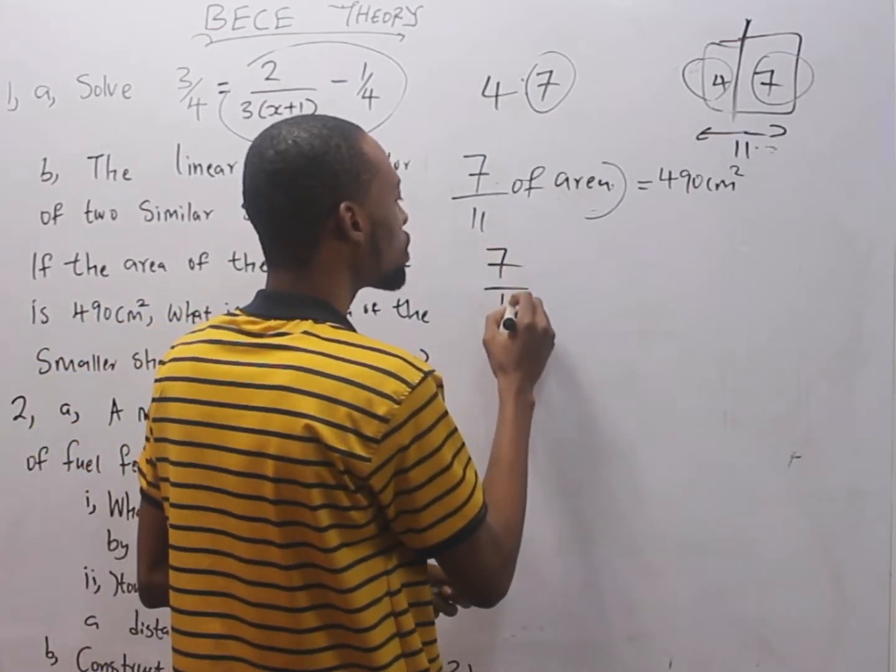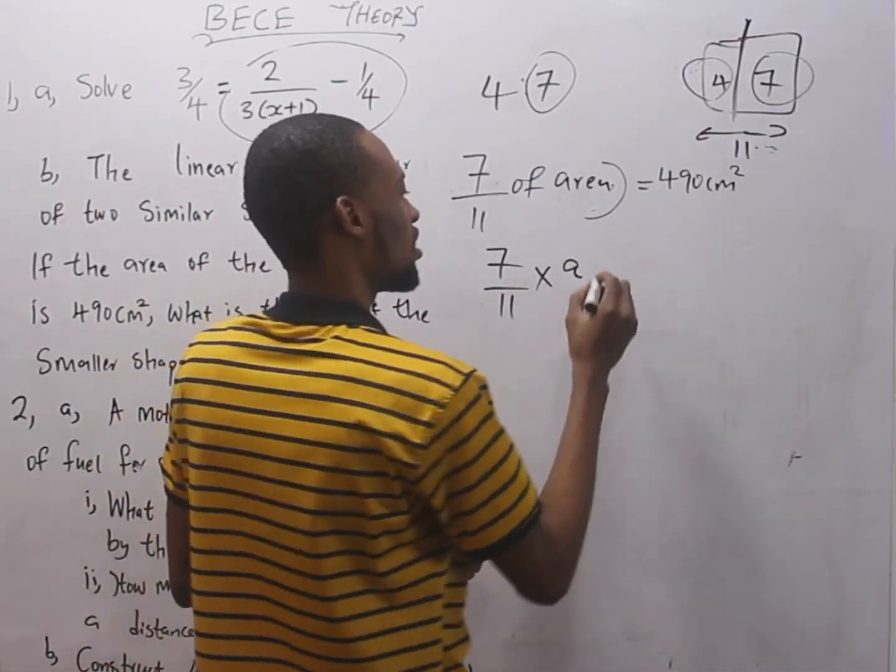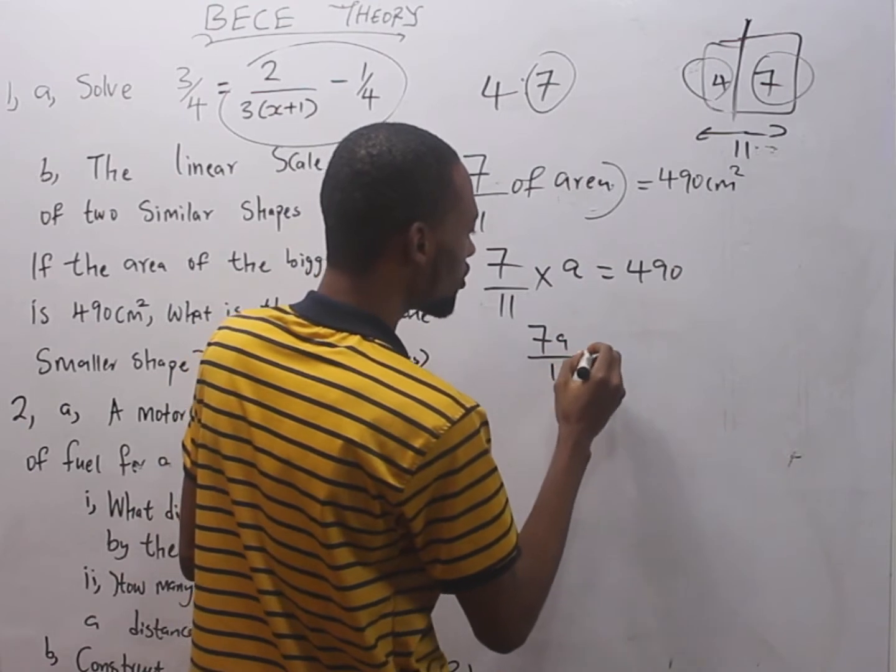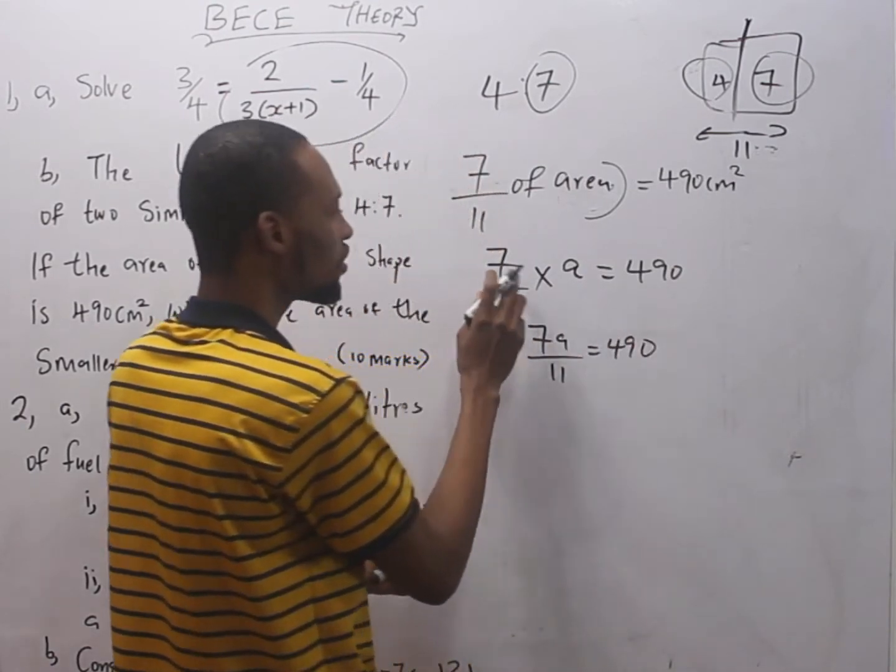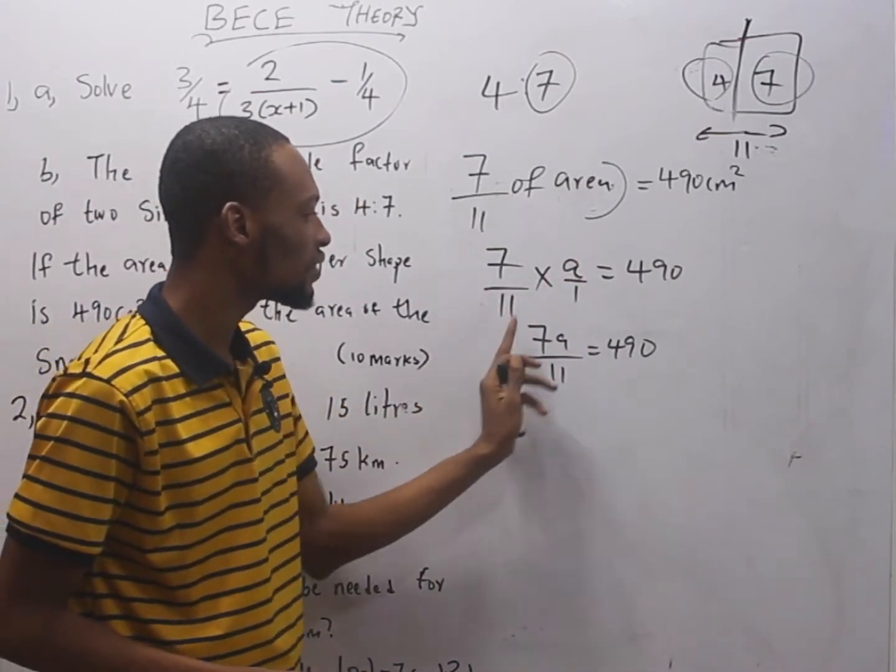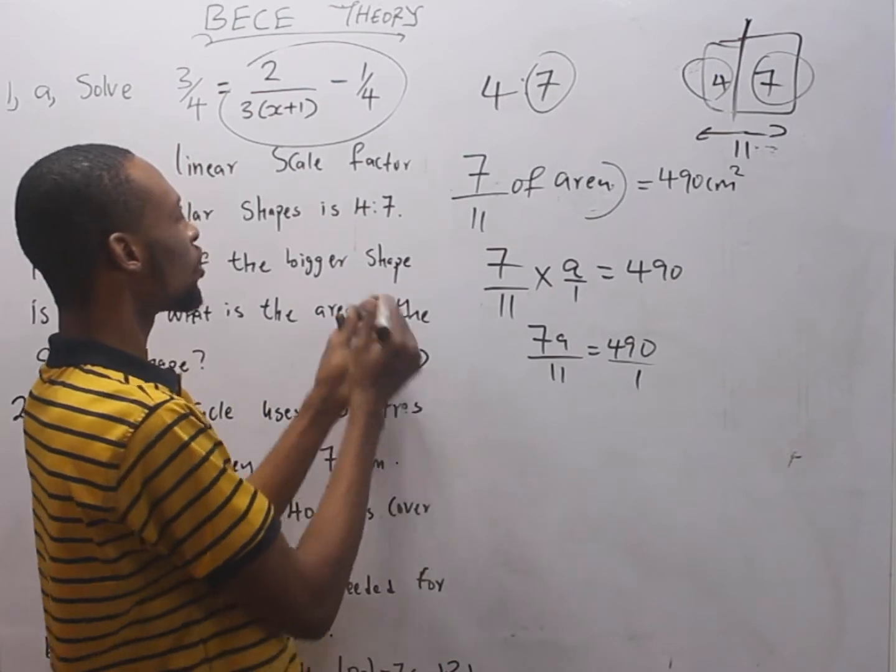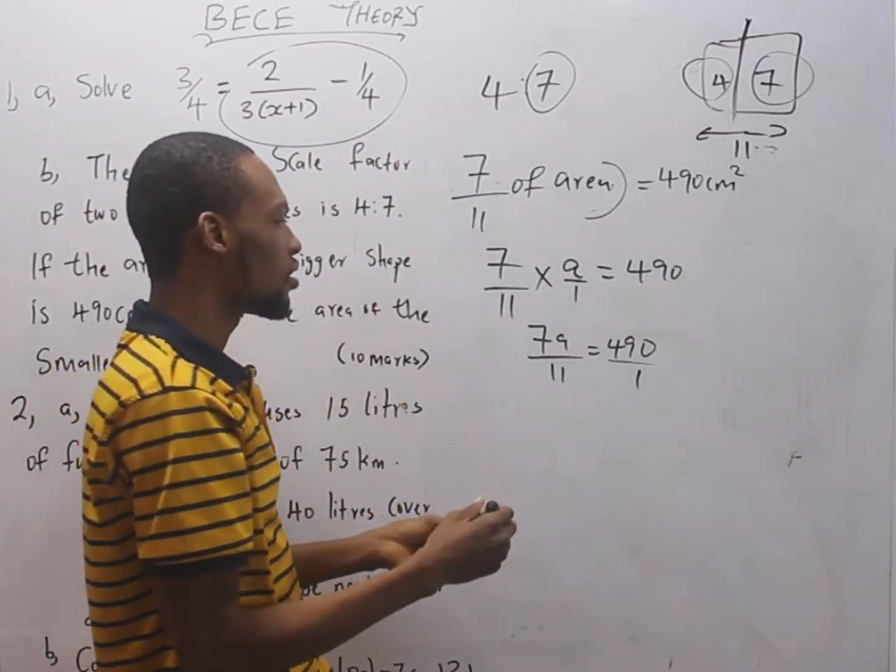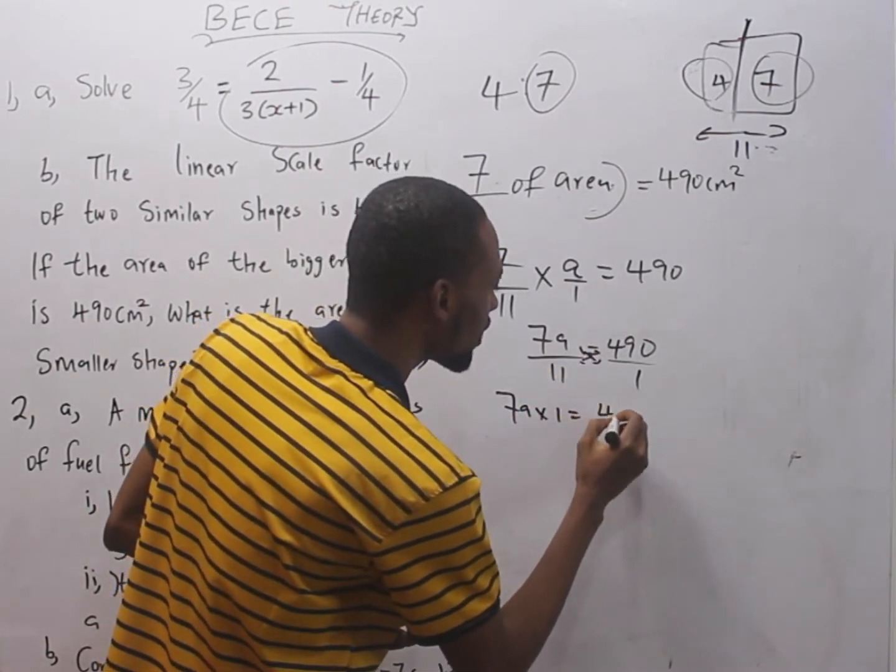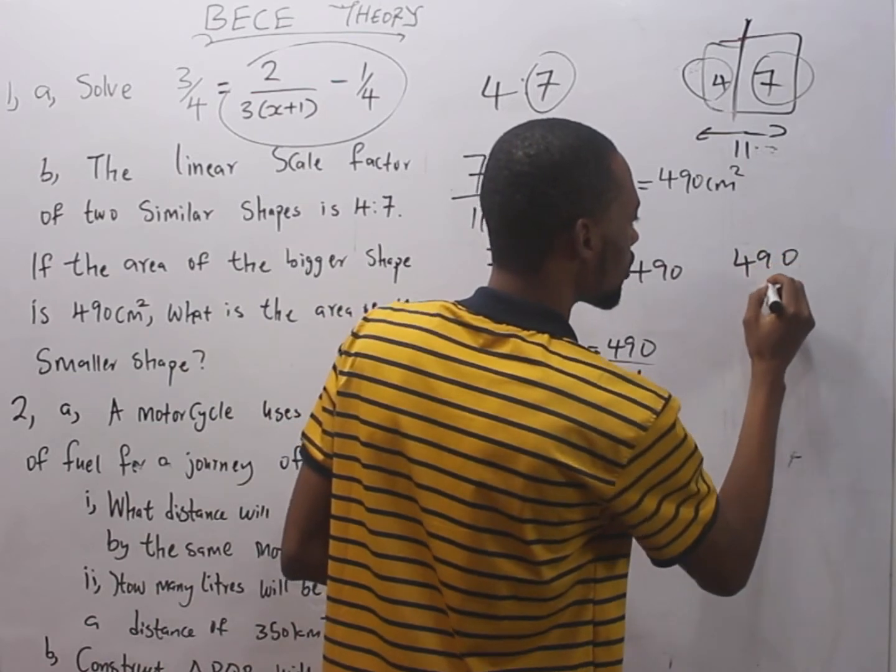7 over 11 of the total area. Let's represent it with A. It equals 490. This means 7A over 11 equals 490. We cross-multiply. It will give us 7A times 1 equals 490 times 11. So 7A equals 490 times 11.